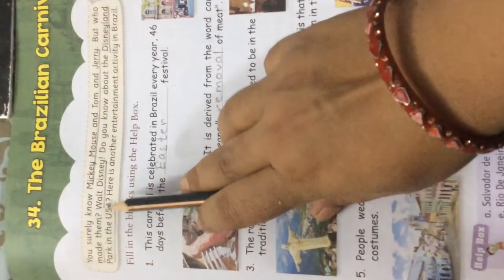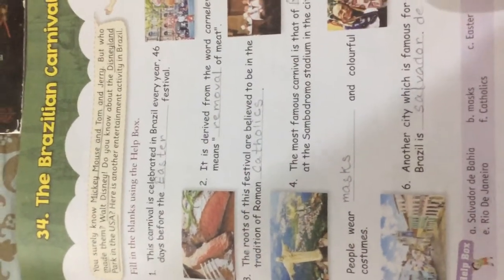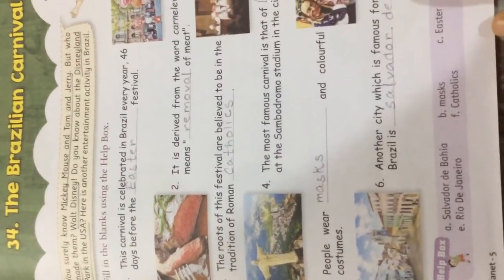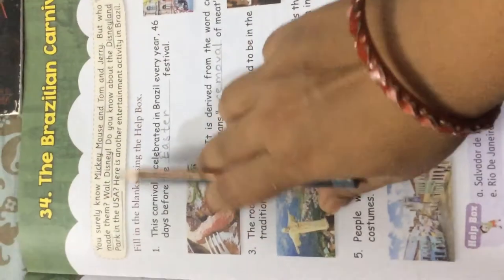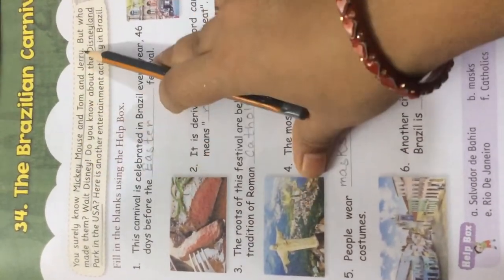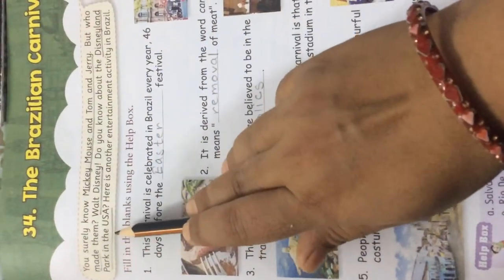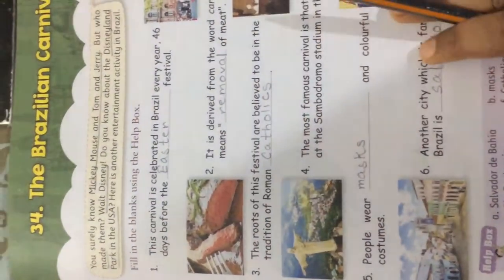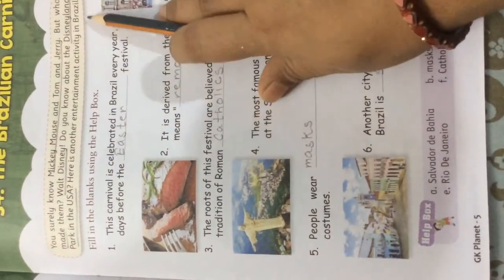You surely know Mickey Mouse and Tom and Jerry. Walt Disney created Mickey Mouse and Tom and Jerry, and the Disneyland Park is located in the USA. Here is another entertainment activity — this time in Brazil.